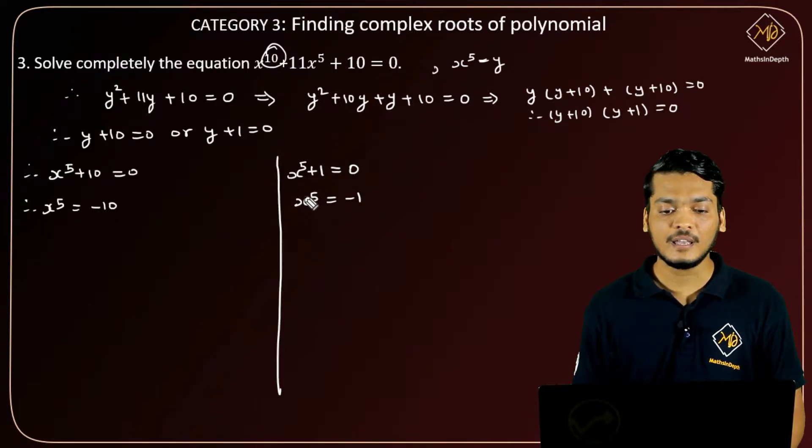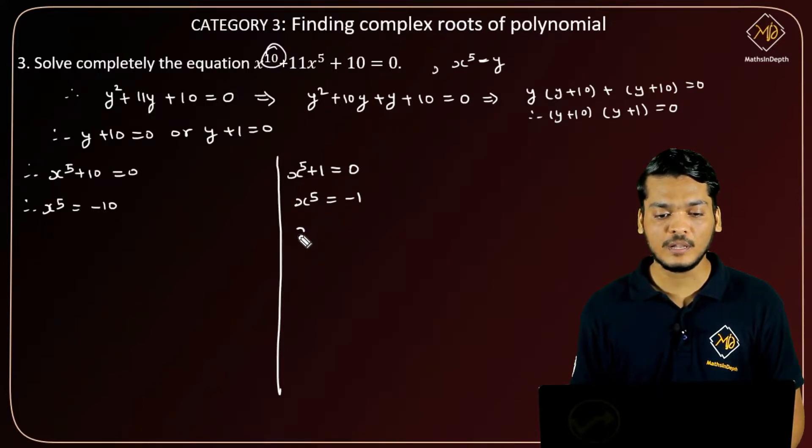So from this equation, we have x = (-1)^(1/5). Therefore, x equals to (-1)^(1/5).